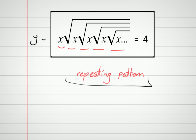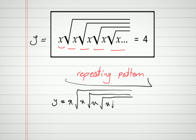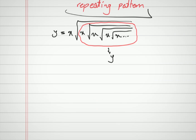Why don't we just call it y? So y is equal to x times square root of x times square root of x, and so on. Now take a look here — let me circle this part. Isn't it familiar? It's just y, right? It's exactly y. It's repeating itself infinite times, so it doesn't matter that it's a part of it — it is y.